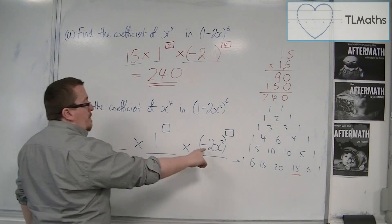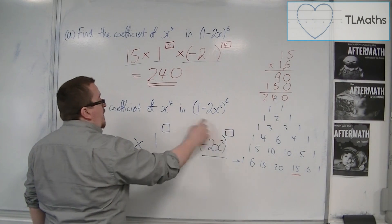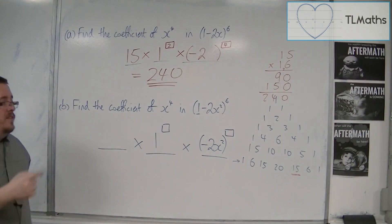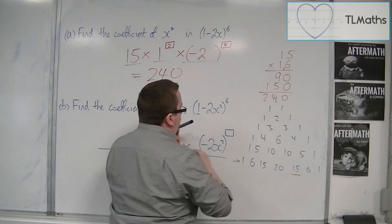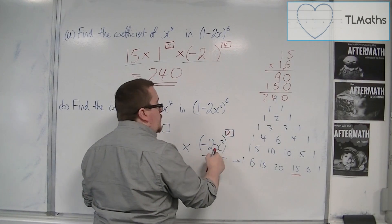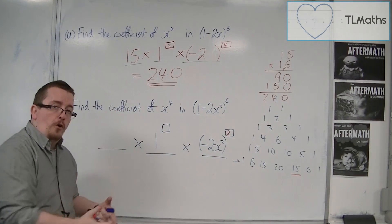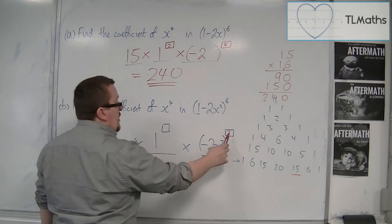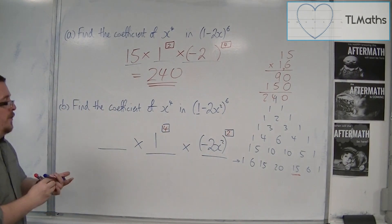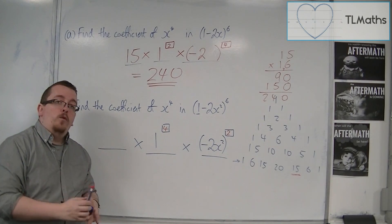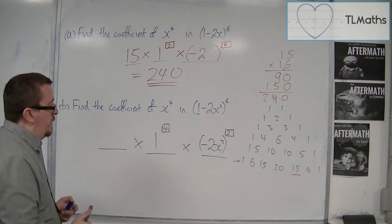Now if I look at minus 2x squared to the power of something, and I want x to the 4, this number has to be 2 this time. It's not 4, because x squared to the power of 2 is x to the 4. Now if that's 2, then that is 4. So this will help me identify which term I'm looking for.